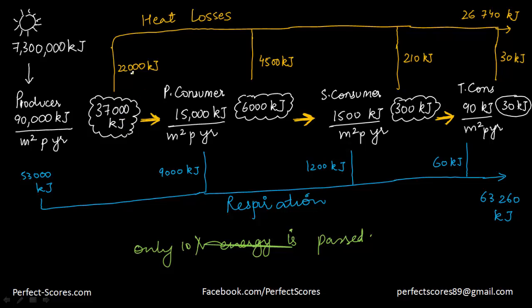Out of the 37,000 kilojoules, 22,000 kilojoules are lost as heat, so the primary consumer needs 15,000 kilojoules per meter squared per year, but 9,000 kilojoules are lost due to respiration, and only 6,000 kilojoules are passed on. Of these 6,000 kilojoules, 4,500 are lost as heat, so the secondary consumer gets only 1,500 kilojoules. Of those 1,500, 1,200 are lost due to respiration, giving only 300 kilojoules. Of those 300, 210 are lost as heat, so only 90 kilojoules reach the tertiary consumer, of which 60 are lost to respiration, leaving just 30 kilojoules.